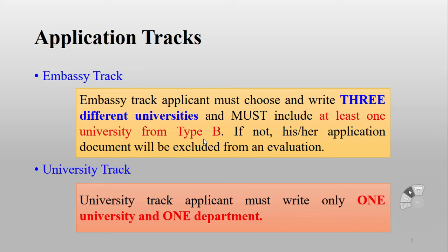You cannot write three different personal statements. You must include at least one university from Type B. So you will select two universities from Type A and one from Type B. For the University Track, you must write only one university and one department — you directly apply to only one university.